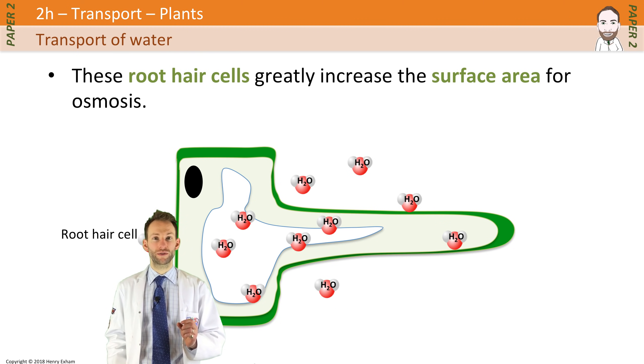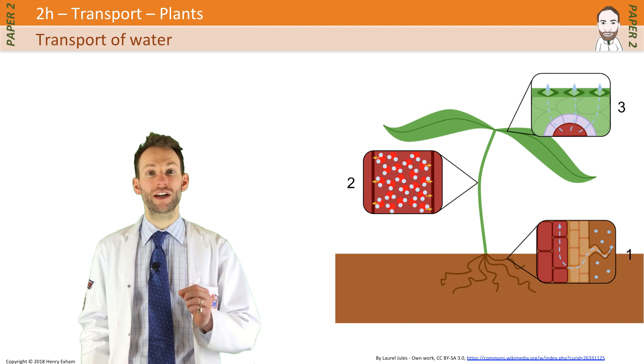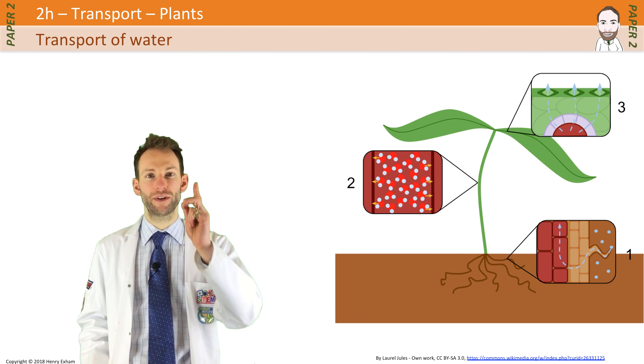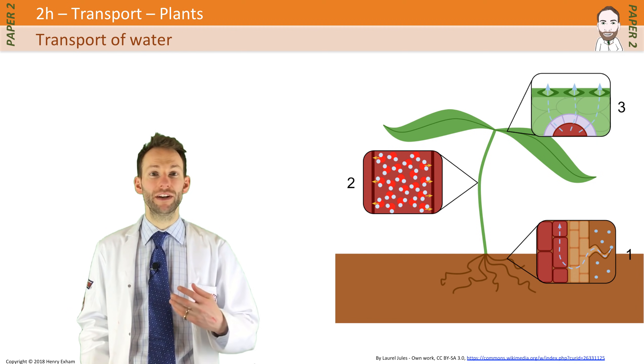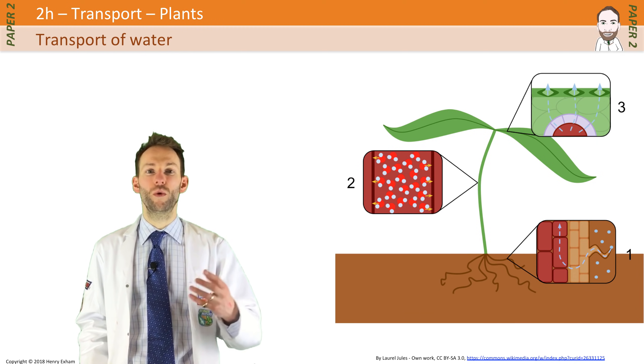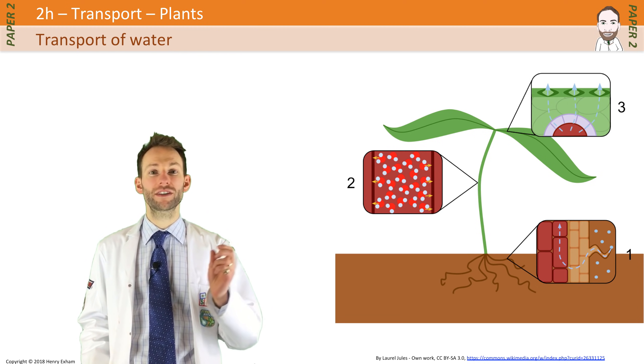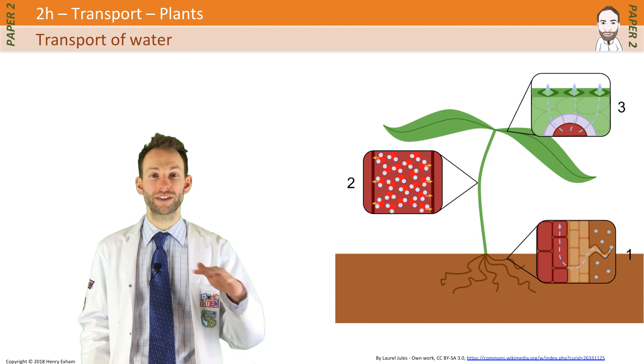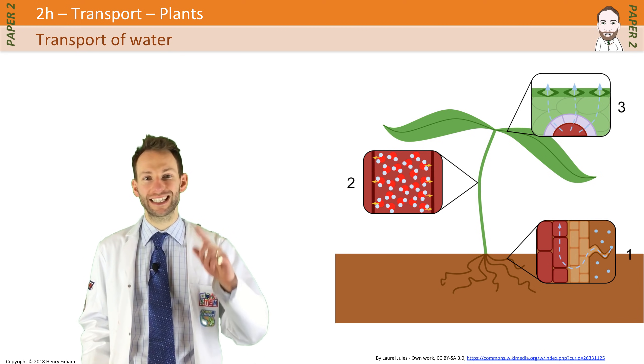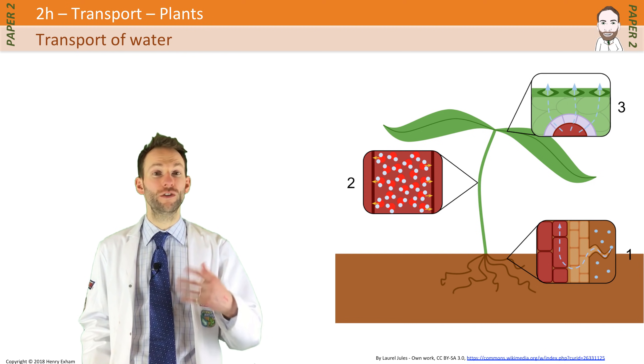Once inside the root cells, it can then pass into the xylem vessels to be taken up the stem to the leaves. However, if the leaf is photosynthesizing, then water can actually get lost at this stage through the leaves via the little stomata. The stomata have to be open, those little pores on the underside of the leaf, to let gases in and out for gas exchange for photosynthesis.